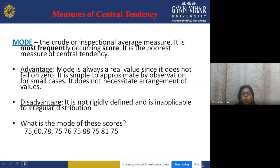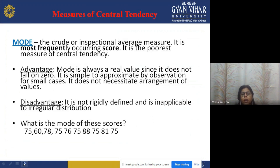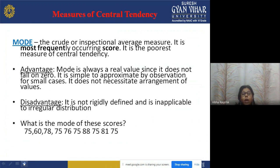To find the mode of the scores 75, 60, 78, 75, 76, 75, 88, 75, 81, and 75: you need to find which score occurs most frequently. By observation, 75 occurs most frequently, so 75 is the mode. Note that we do not need to arrange the values in ascending or descending order to calculate the mode.